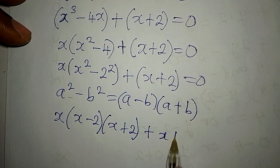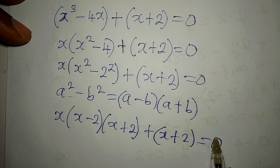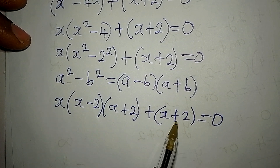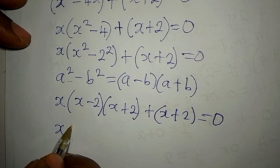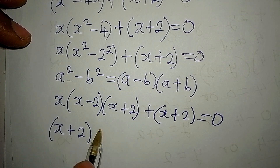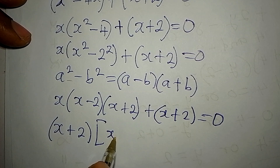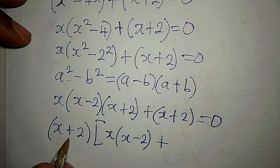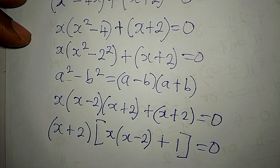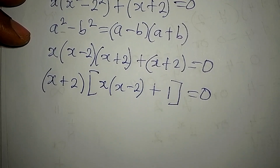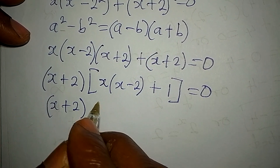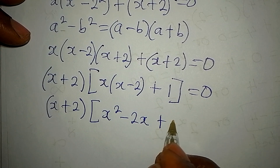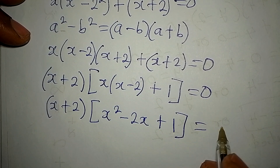Now we look for what is common. x plus 2 appears in both terms, so (x plus 2) is a common factor. Factoring it out gives (x plus 2) times [x(x minus 2) plus 1] equals zero. Expanding the bracket, we get (x plus 2)(x squared minus 2x plus 1) equals zero.